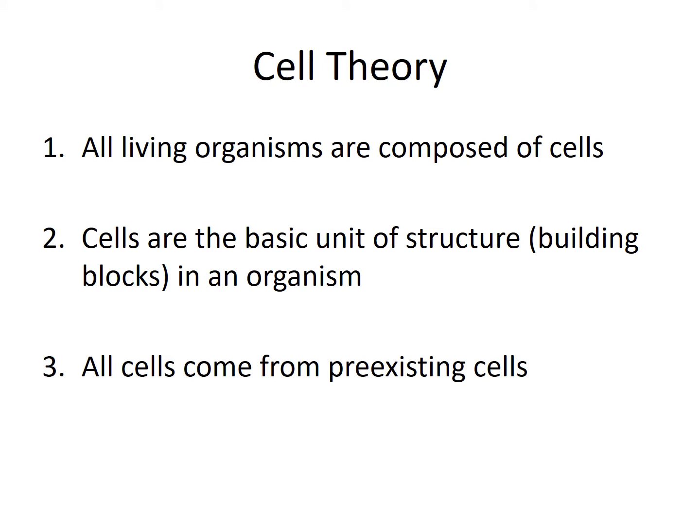We are here to talk about sexual and asexual reproduction and the way that it works in various organisms across the spectrum. One thing we have to remember when talking about sexual and asexual reproduction is our cell theory. The main thing to remember about cell theory is number three, which states that all cells come from pre-existing cells. That has to do with the reproduction of cells for an organism — every cell in an organism came from a pre-existing one.